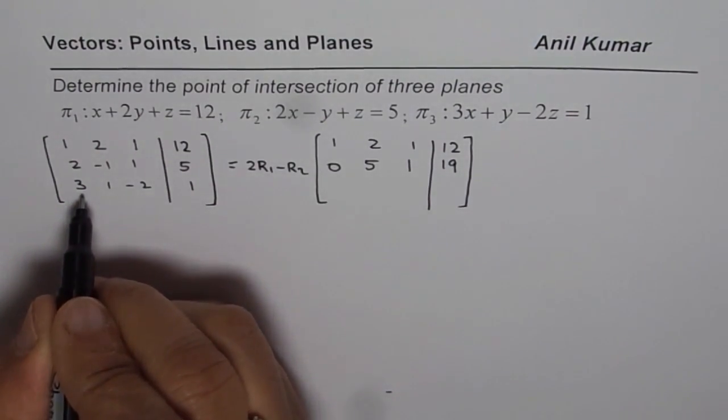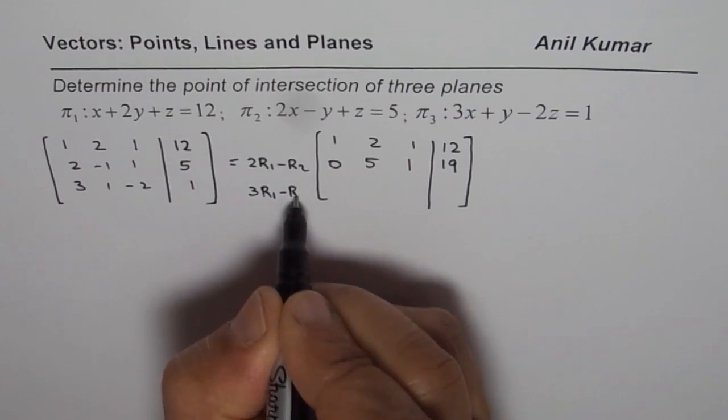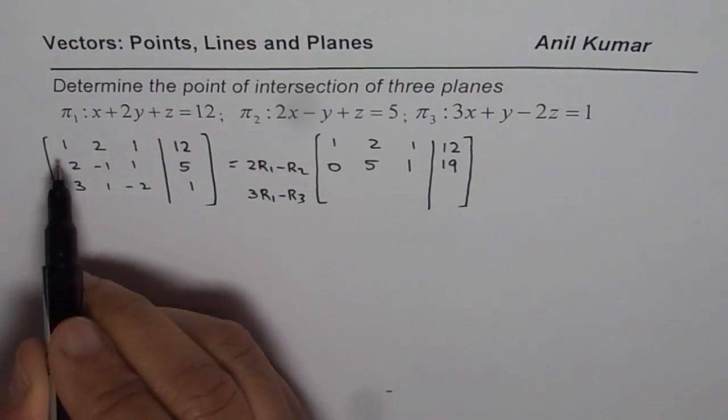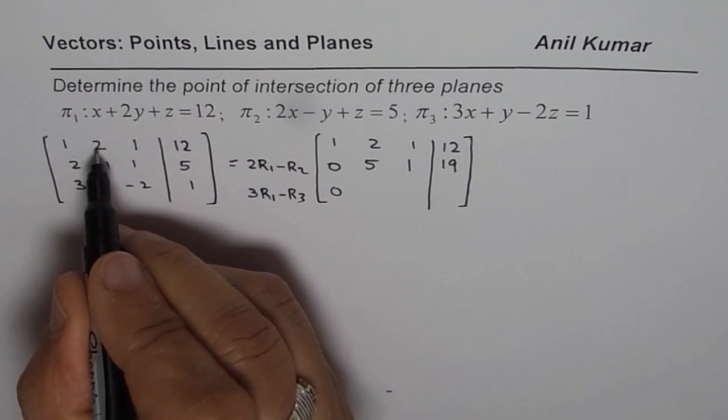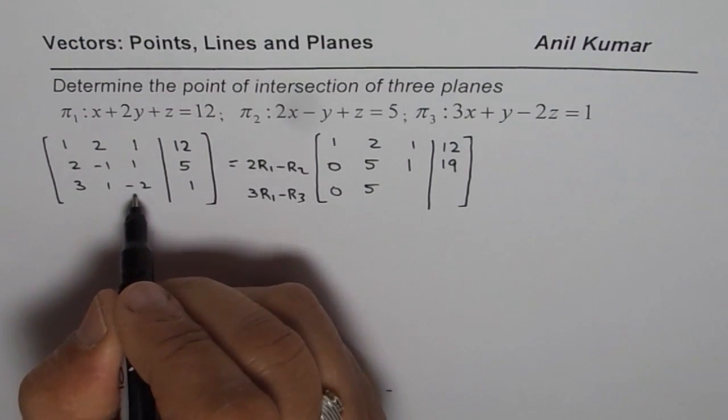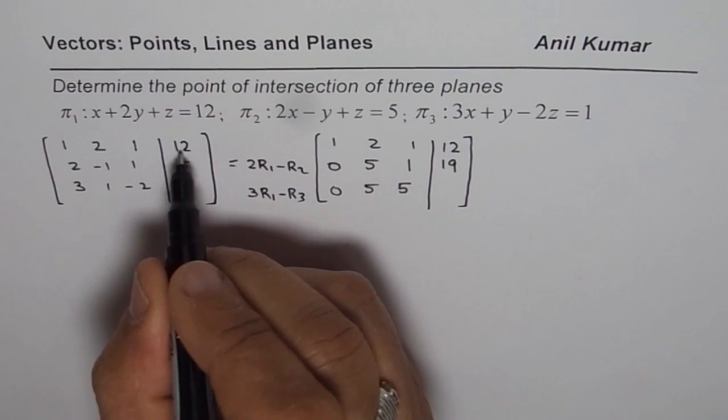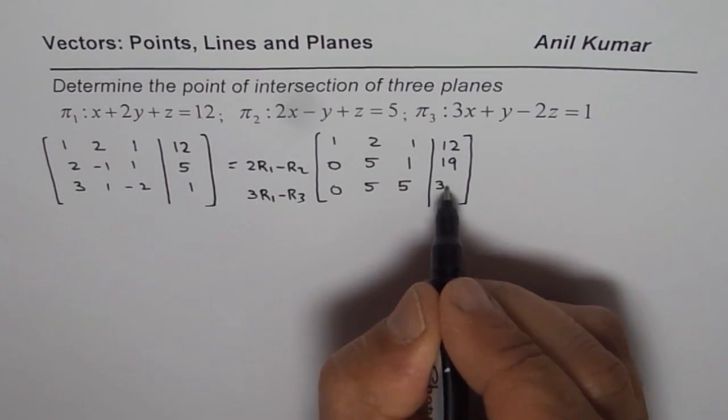We need a zero here. So 3 times R1 minus R3. That is the step. 3 - 3 is 0. 3 times 2 is 6, 6 - 1 is 5. 3 minus -2 will also give us 5. 3 times 12 is 36, minus 1 is 35.